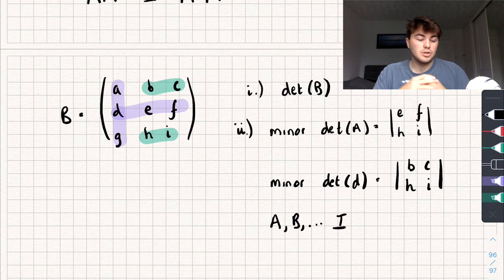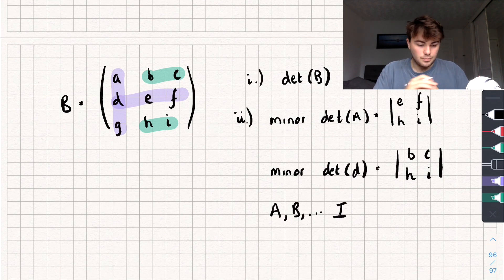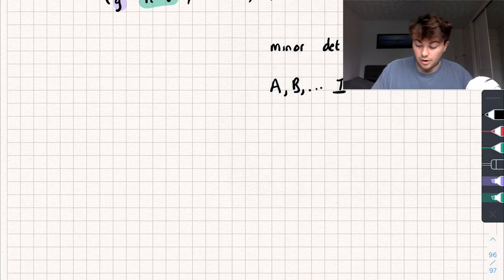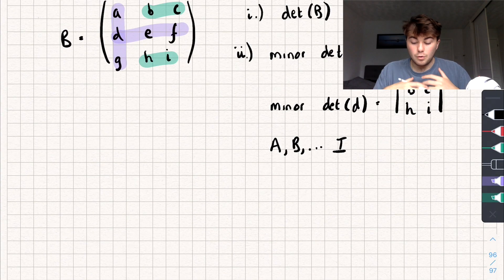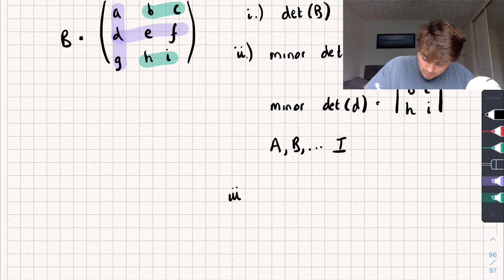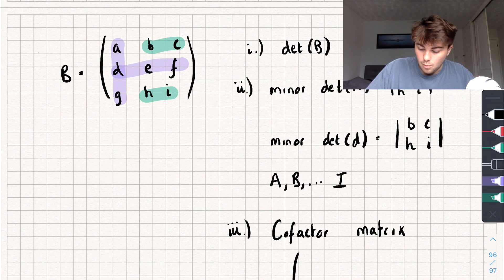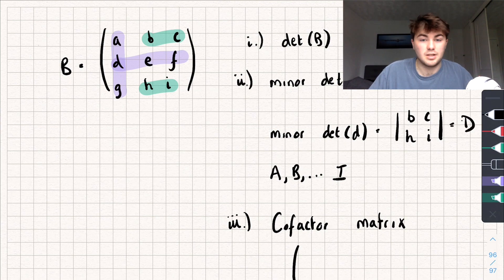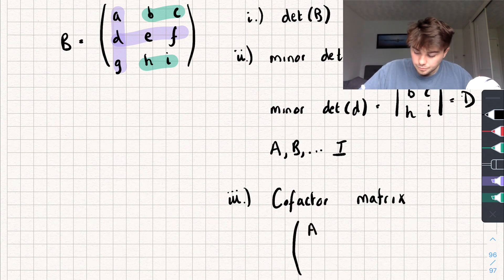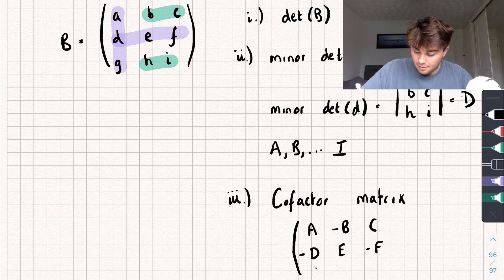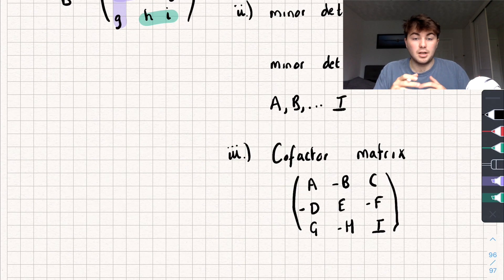Once you've found these, you're going to find what's called the cofactor matrix. To find the cofactor matrix, you create a 3x3 matrix made up of your minor determinants — calling the minor determinant of A capital A, of B capital B, and so on. The cofactor matrix is: A, negative B, C in the first row; negative D, E, negative F in the second; and G, negative H, I in the third. These are the minor determinant values with alternating sign changes applied.